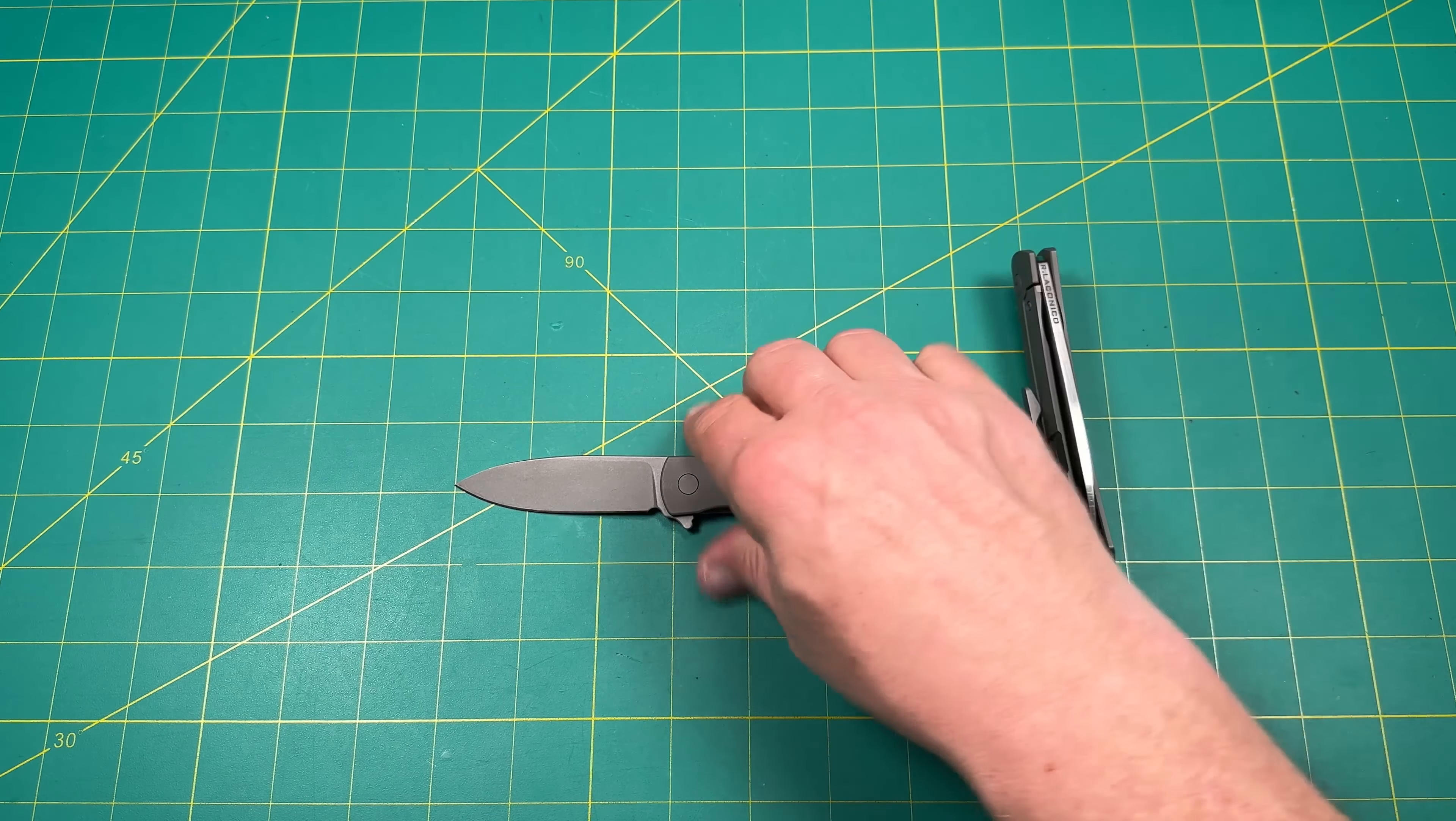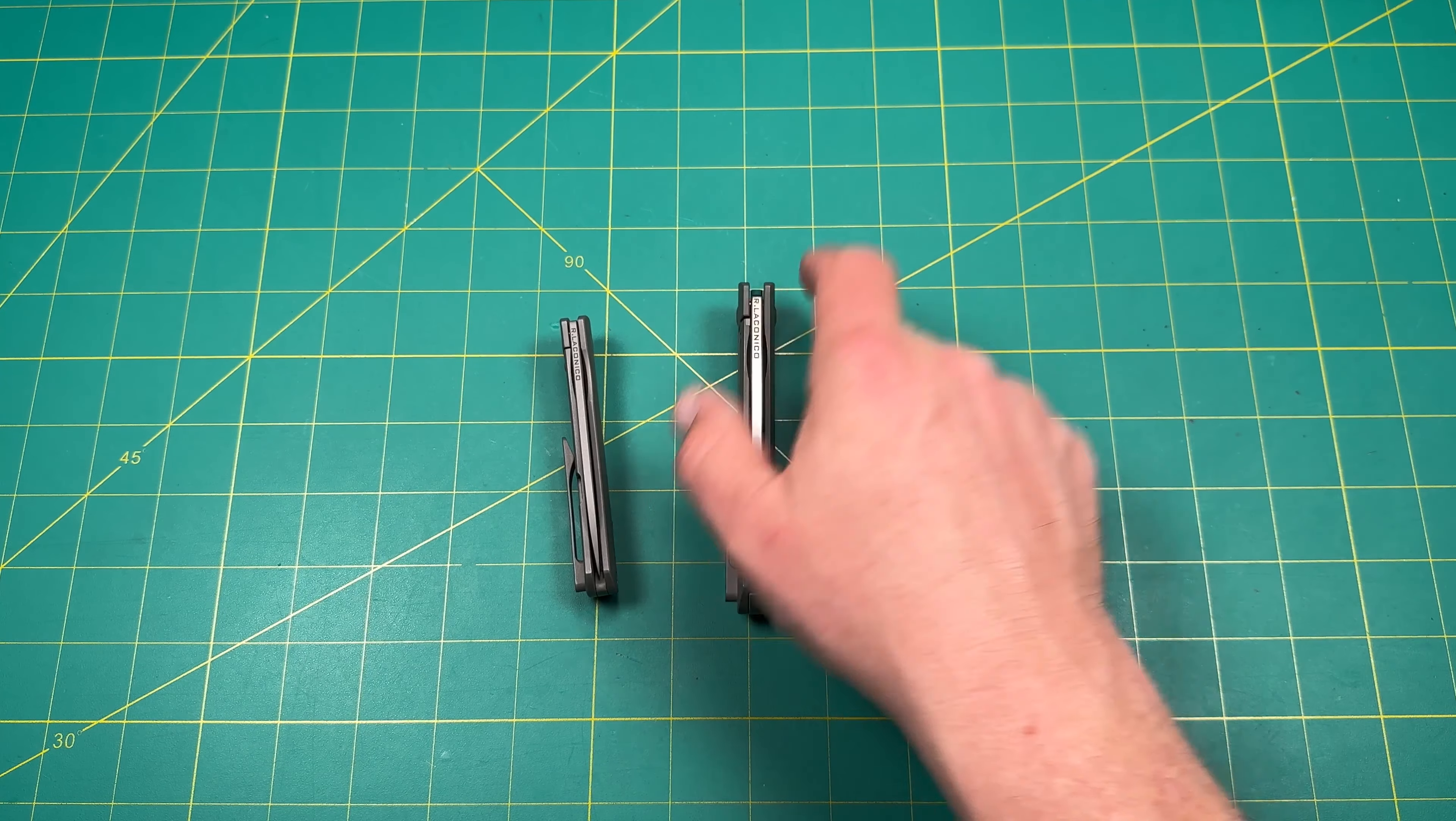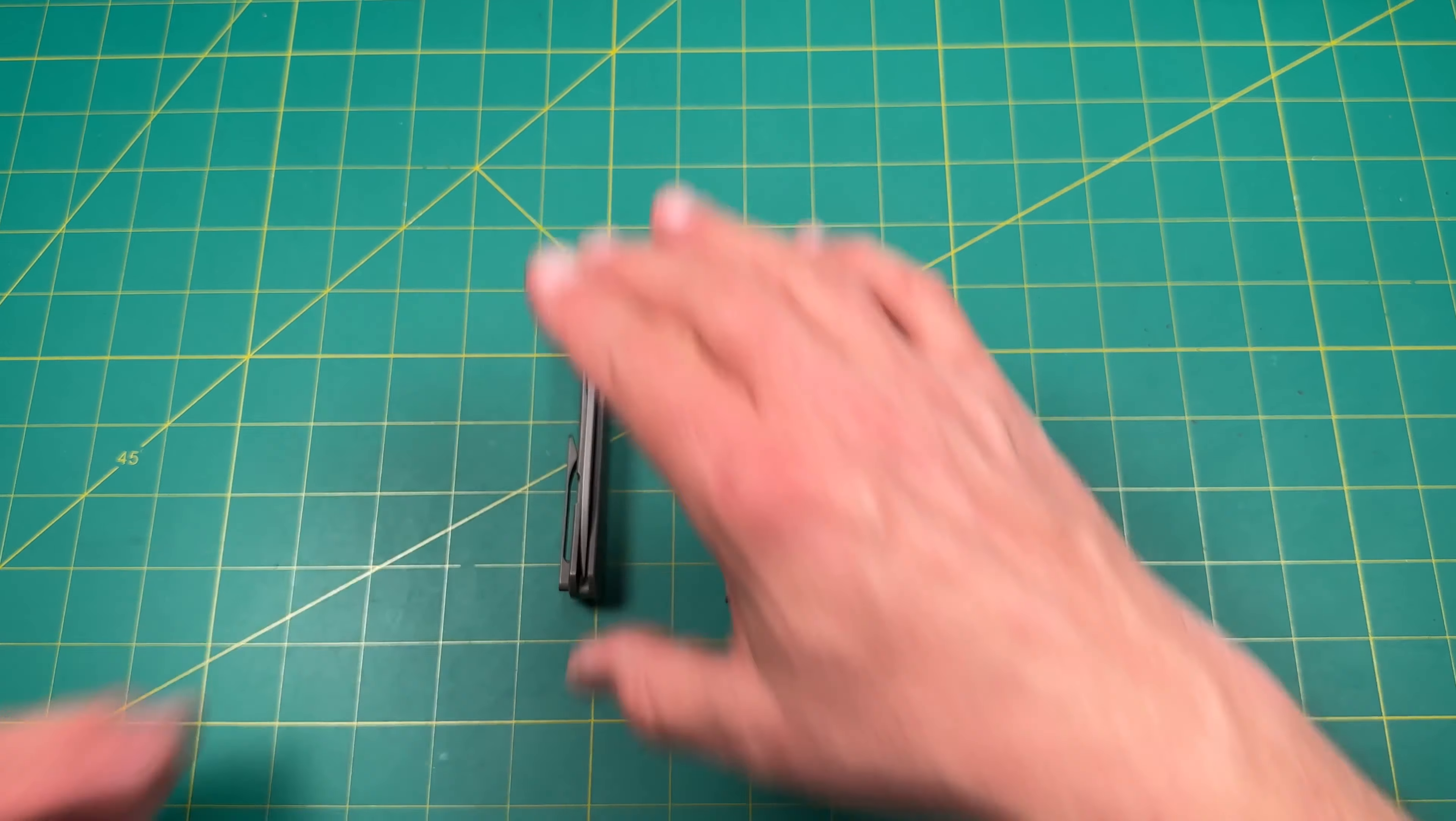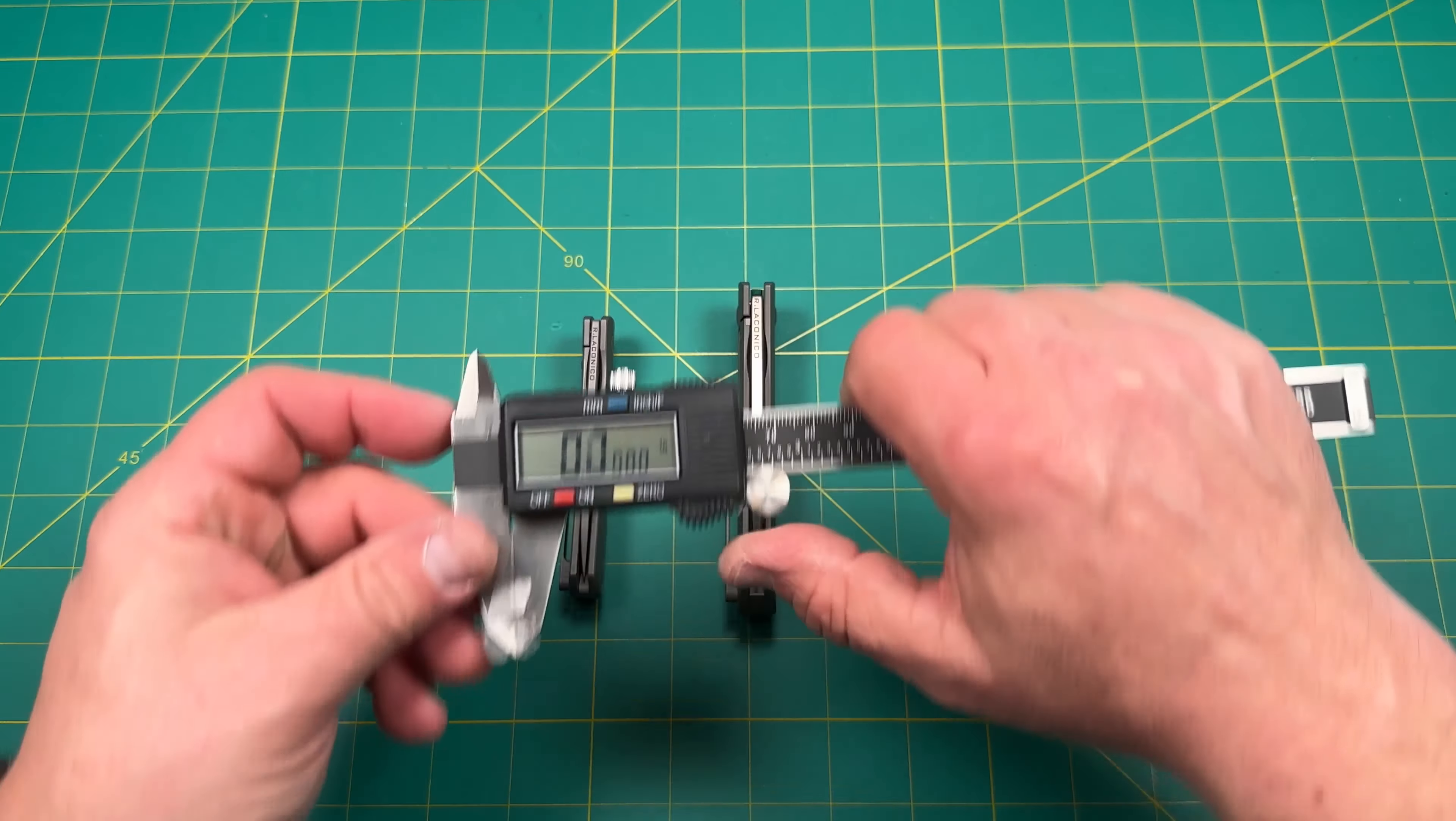I'm going to put this over here real quick. Let's do the blade stock thickness. Now we can compare the two. You can definitely see that the Mini Keen is certainly thinner than the regular Keen. So there's definitely a difference right there, right away. Dropped my ruler. I'll have to pick that up. I'm going to finish the video here.